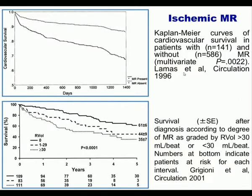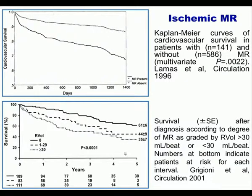Two classical papers demonstrate the unfavorable impact of mitral regurgitation on natural history. The Lamas paper showed that some degree of mitral regurgitation enormously impacts patient survival. Similarly, the Grigioni paper from the Mayo Clinic showed that the presence of mitral regurgitation affects survival, and that survival is proportional to the degree of regurgitation — with severe mitral regurgitation carrying the worst prognosis.